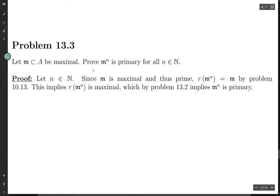So choosing a natural number, since m is maximal, it's prime because maximal ideals are always prime.